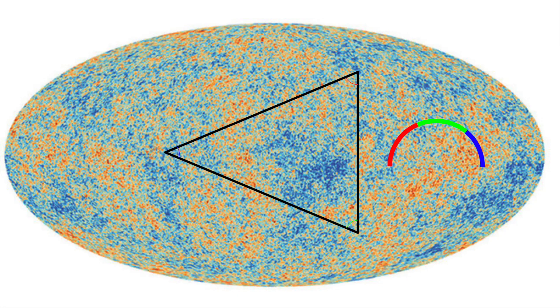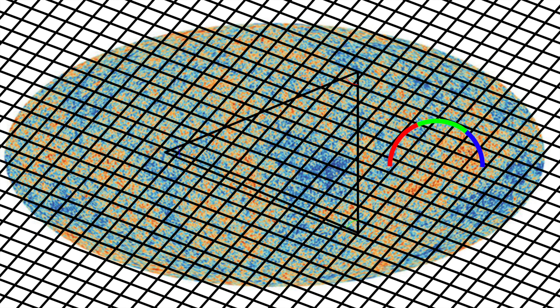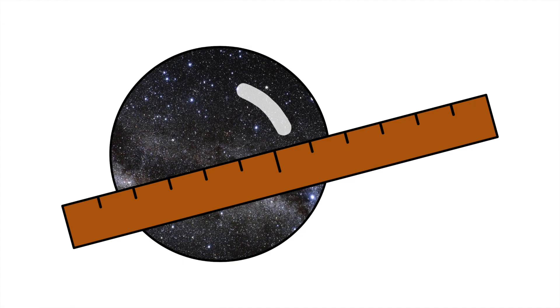So, what shape is our universe? Observations of the cosmic microwave background — leftover light from the early universe and the biggest structure we can observe in space — show triangles with 180 degrees, suggesting a flat universe. But there is still some possibility of other shapes, as our measurements can never be 100% accurate, so the universe might have some tiny amount of positive or negative curvature that simply went undetected.